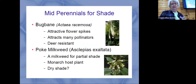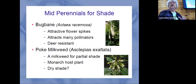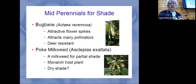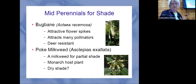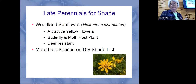Bugbane is another great name — it's a very attractive flower that's going to be kind of tall. The poke milkweed on the bottom is another type of milkweed that monarch butterflies will like as a host. John isn't sure if it grows in dry shade — he hasn't had much luck with that — but supposedly it does. Even if you wanted to try a couple of different milkweeds to see if you can attract monarch butterflies, there's a lot to choose from.